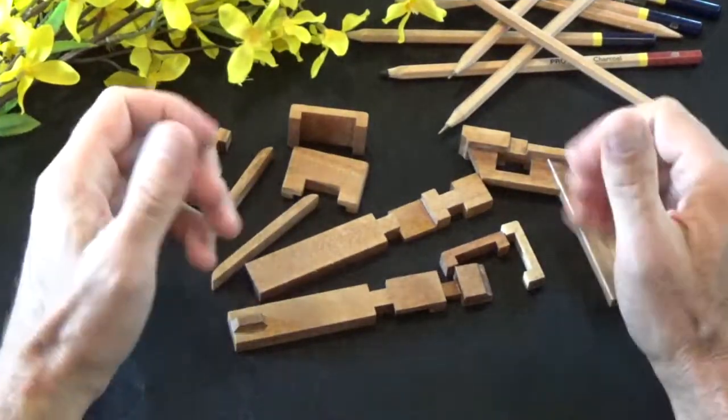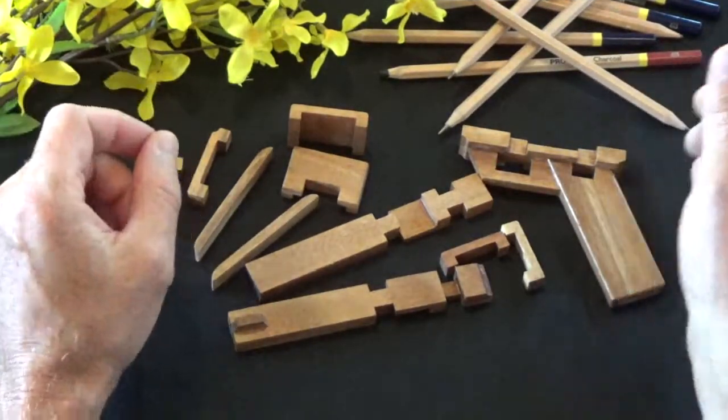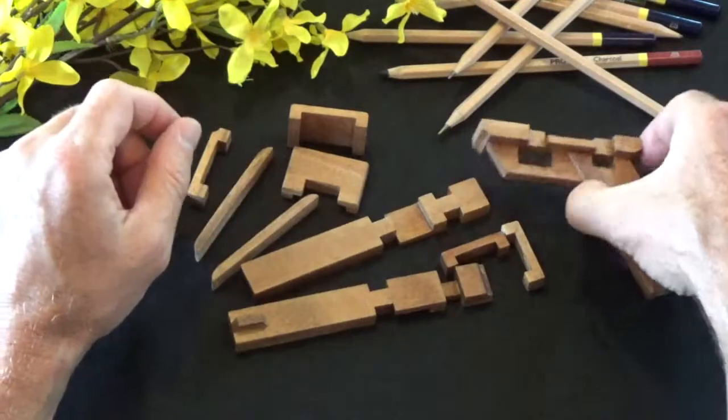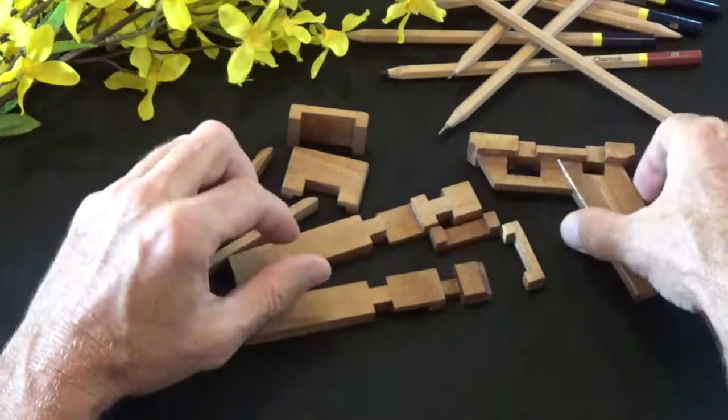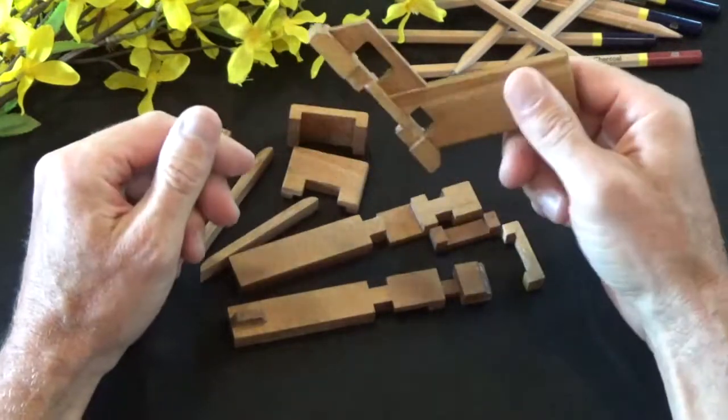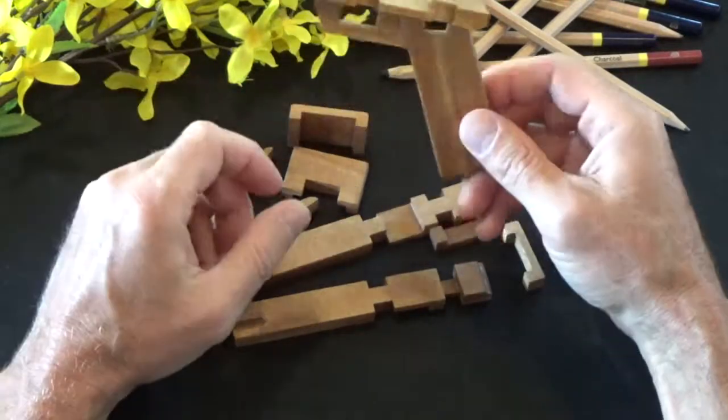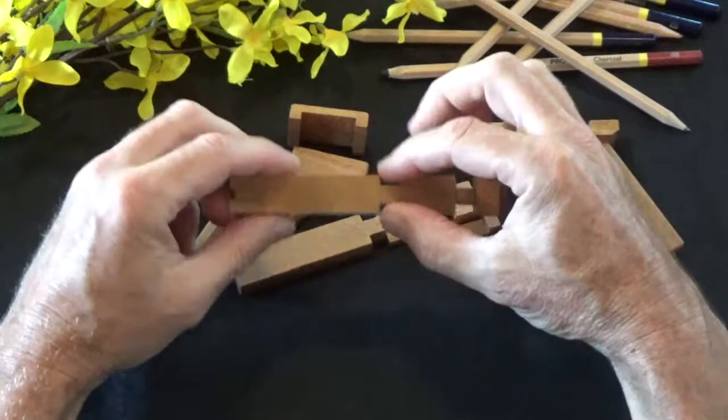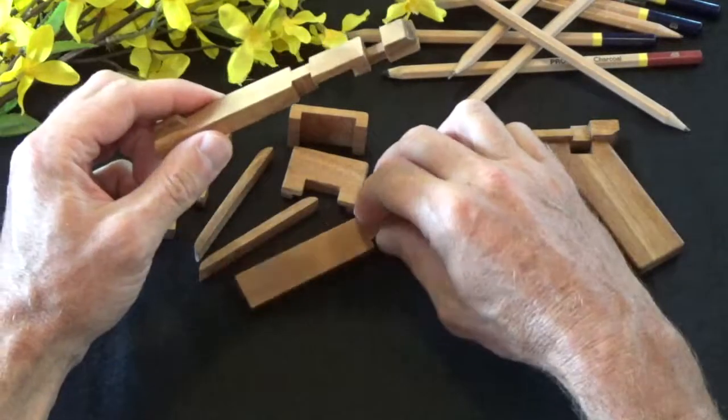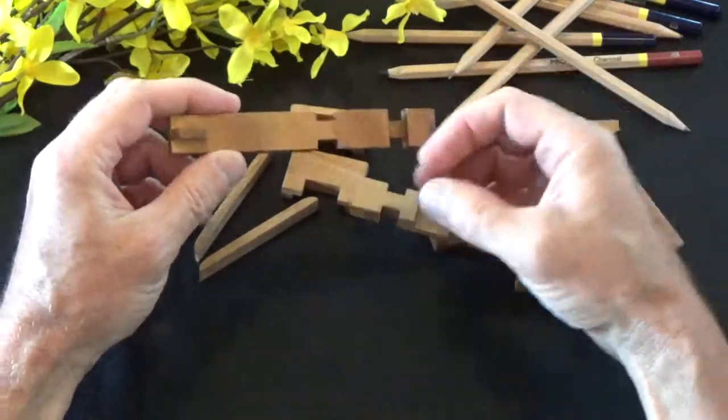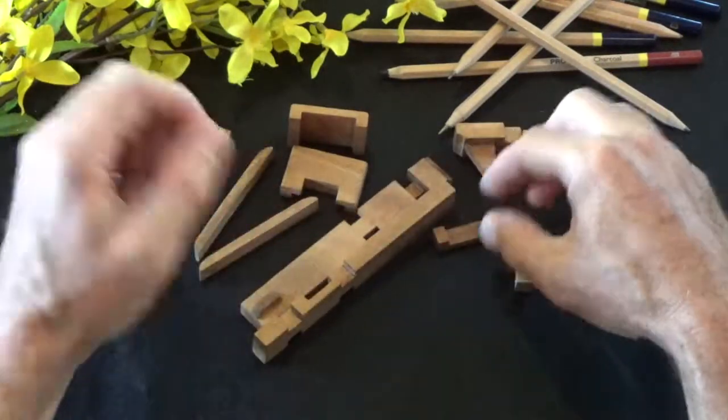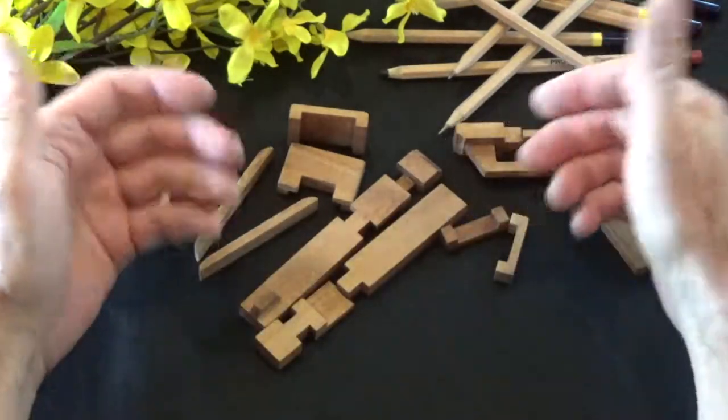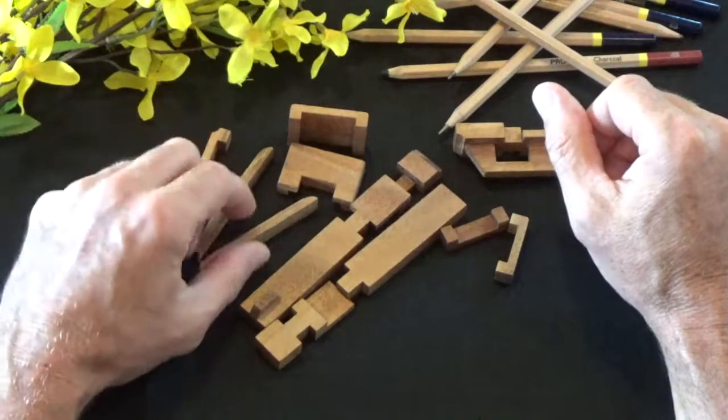Okay, so this puzzle features eleven pieces and these are the eleven pieces here. You have the base, the largest piece is really the gun stock, the handle. These two long pieces make up the primary components of the barrel. And then you have these smaller pieces that are necessary to assemble this puzzle.